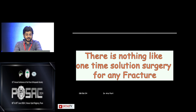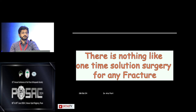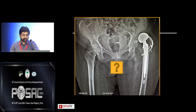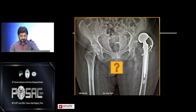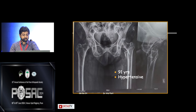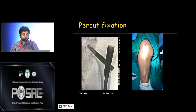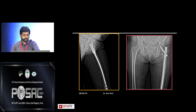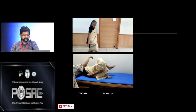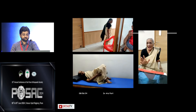There is nothing like a one-time solution surgery for IT fractures of the femur — complications can always arise. Even in a 91-year-old hypertensive patient with an intertrochanteric fracture, minimally invasive percutaneous fixation can be done, with immediate mobilization using a walker — partial or full weight bearing as per pain tolerance. The post-op X-ray shows complete healing in this 91-year-old lady.